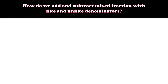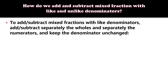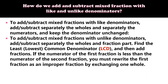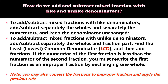For mixed fractions with like denominators, add or subtract separately the whole numbers and the numerators, keeping the denominator unchanged. For mixed fractions with unlike denominators, find the LCD and add or subtract separately the whole and fractional parts. If the numerator of the first fraction is less than the second, rewrite the first as an improper fraction by exchanging one whole. You may also convert the mixed number to an improper fraction and apply the previous rule.